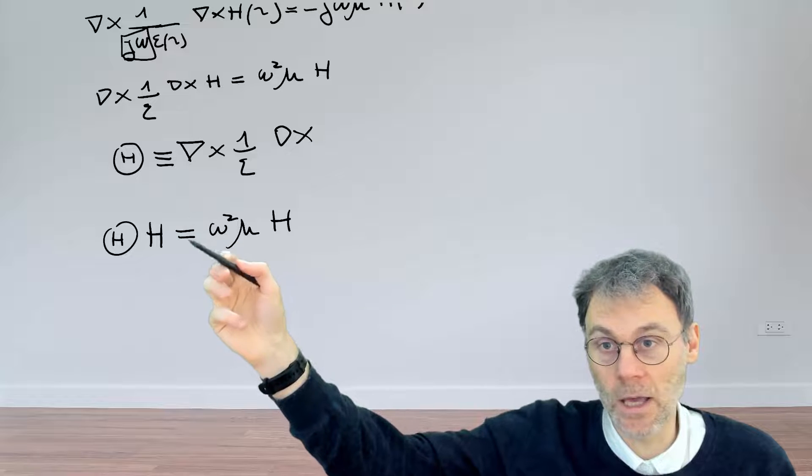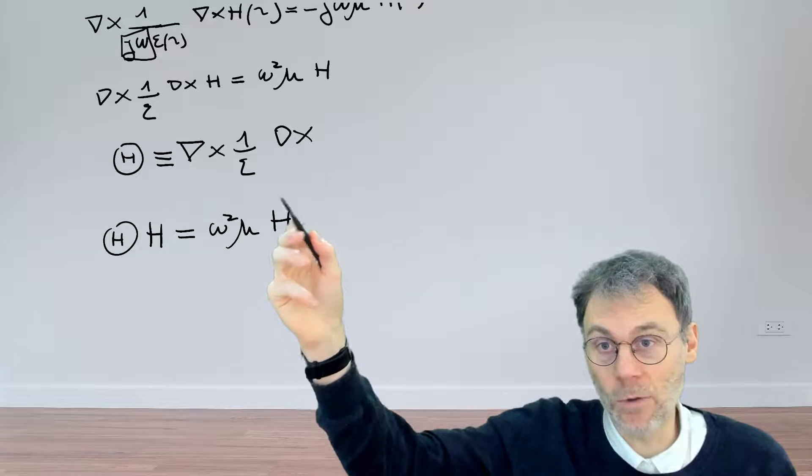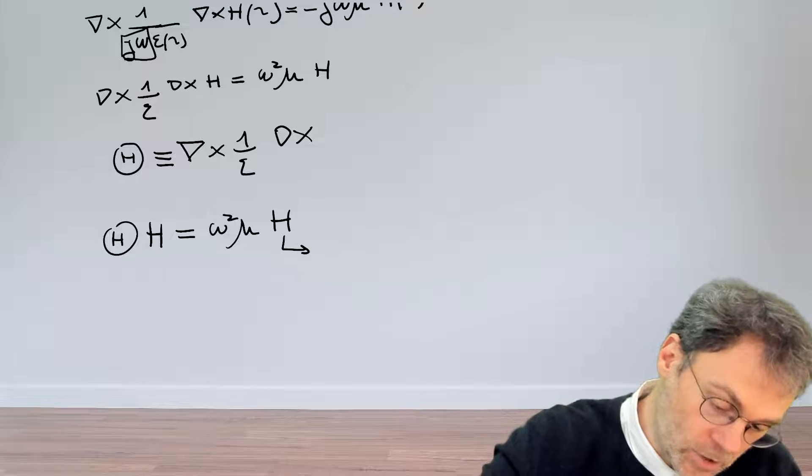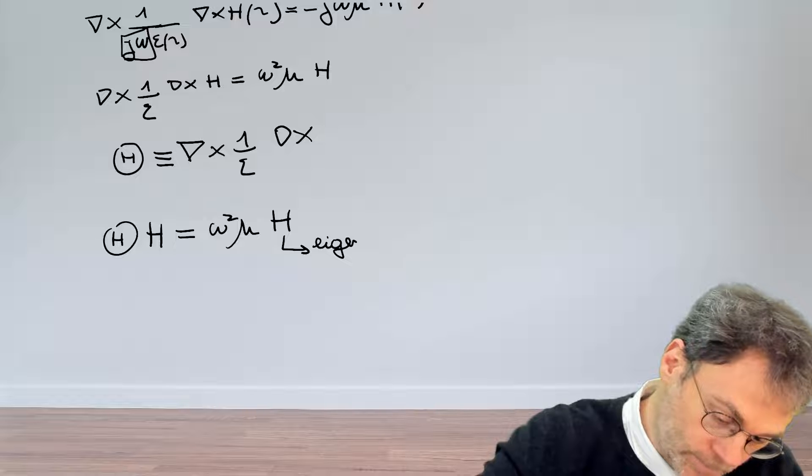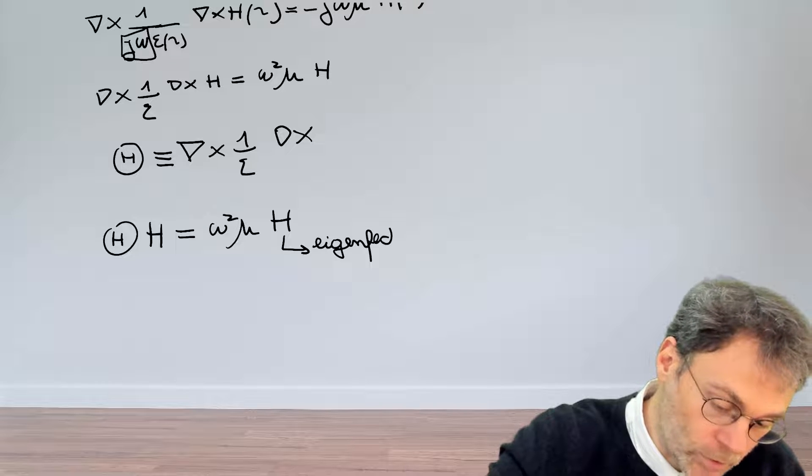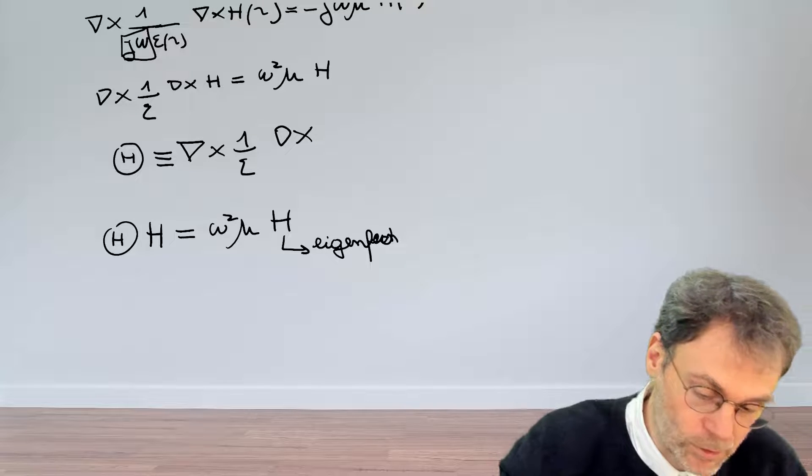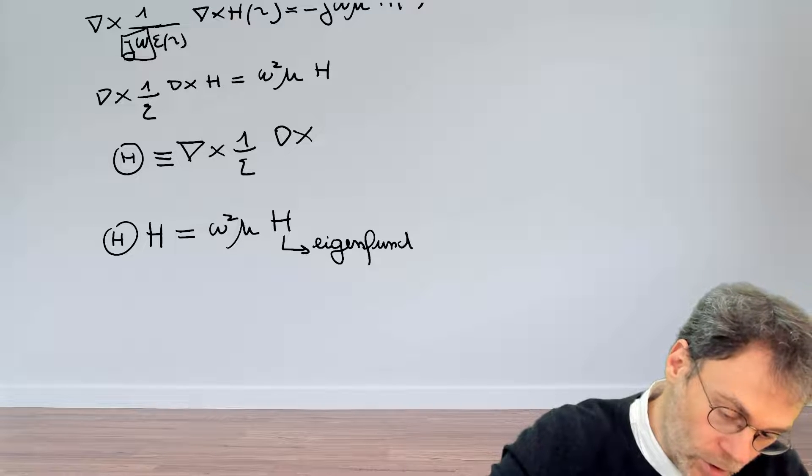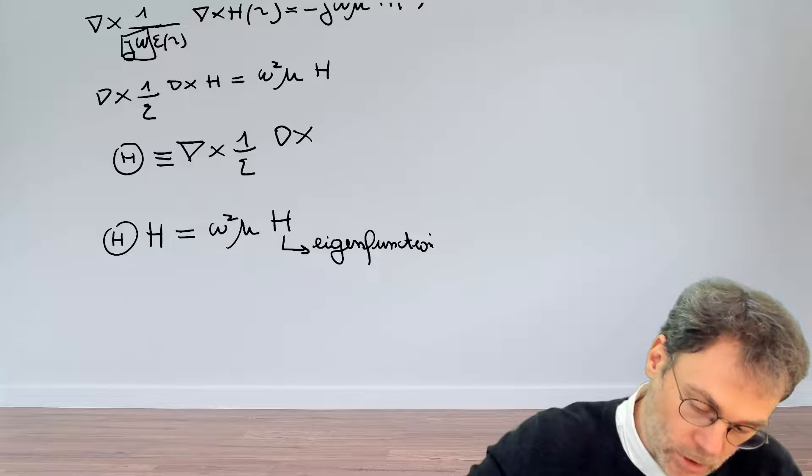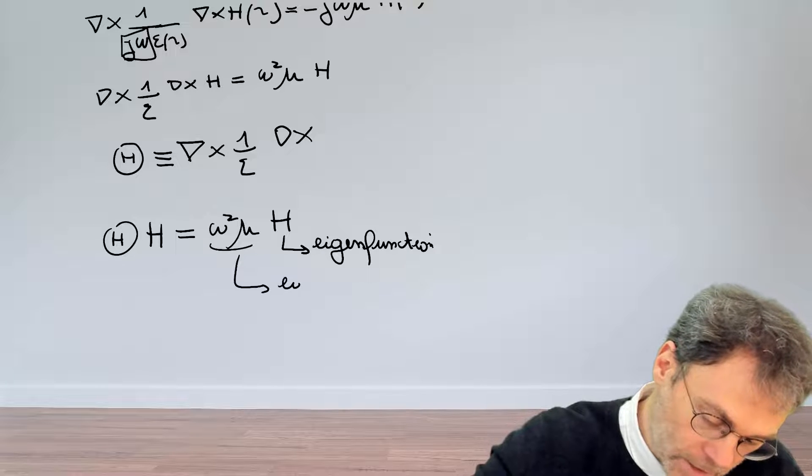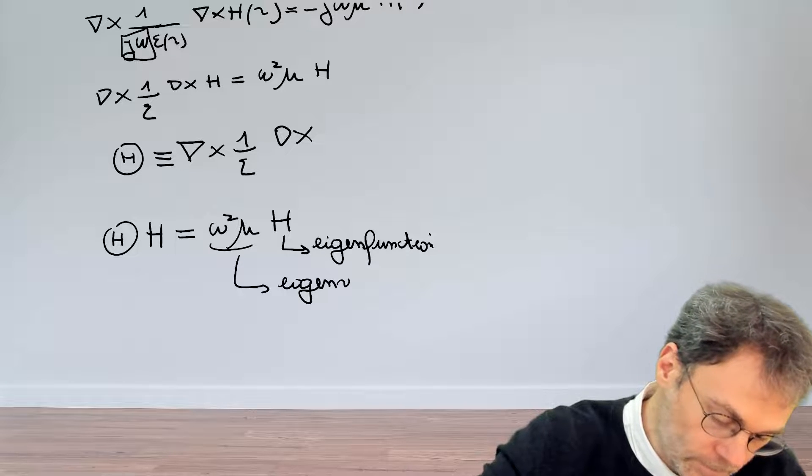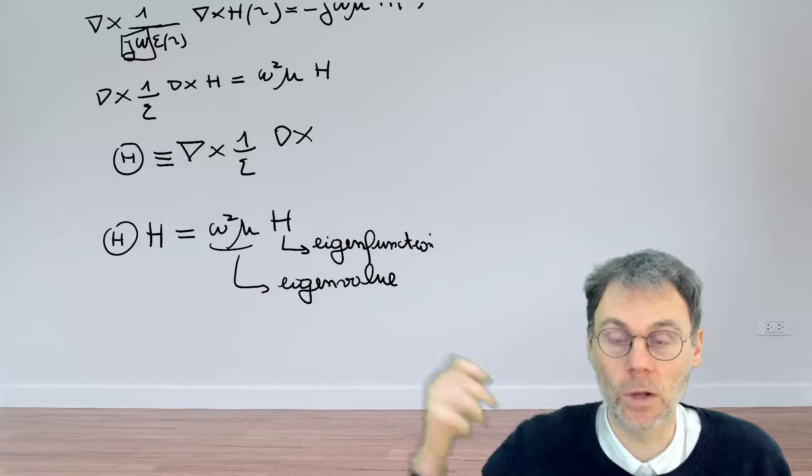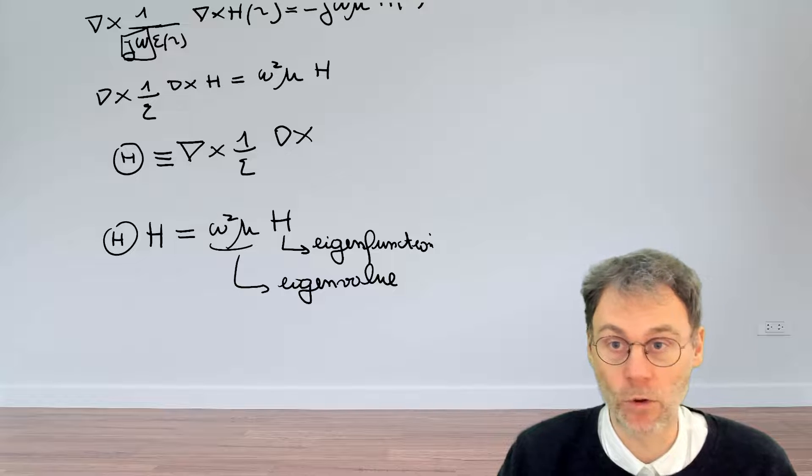So this thing over here is an eigenfunction. So if you're working with matrices, this would be an eigenvector, but here we're talking about a function, so this is a so-called eigenfunction, and then omega squared mu is of course the eigenvalue - the eigenvalue of the operator theta here, which describes Maxwell, which describes the Helmholtz equation.